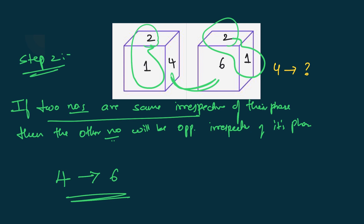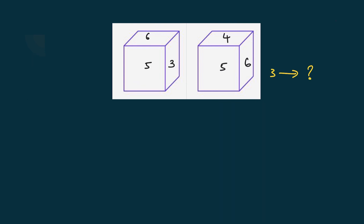Let's solve a similar problem. You have to find the opposite face of three. Here, two numbers — six and five — are present on both dice. As the condition states, if two numbers are the same irrespective of faces, the other numbers are opposite irrespective of their face. Therefore, since five and six are similar, three will be opposite to four.